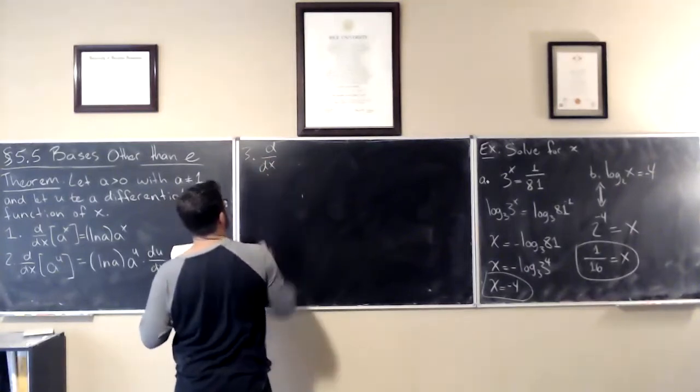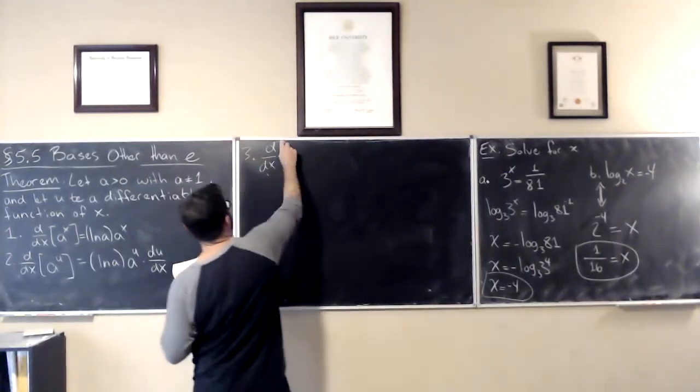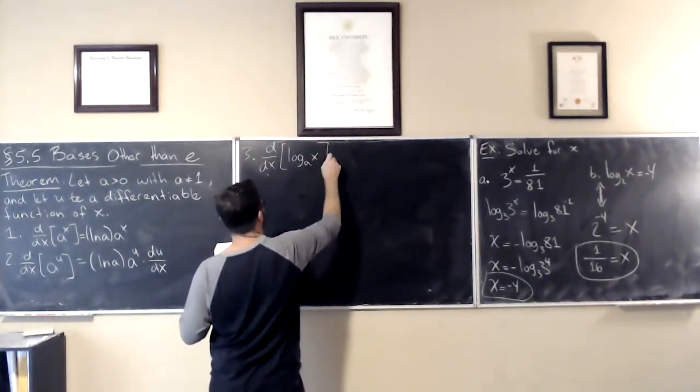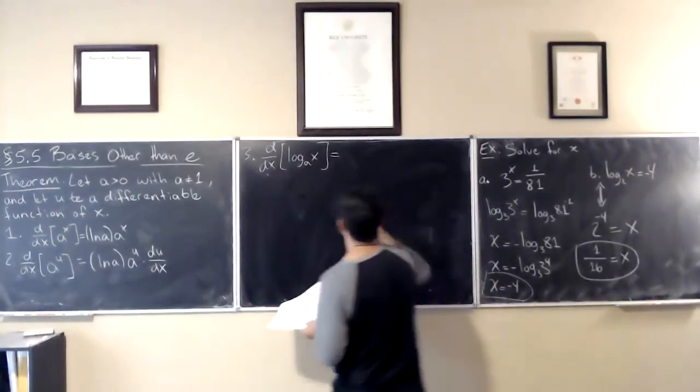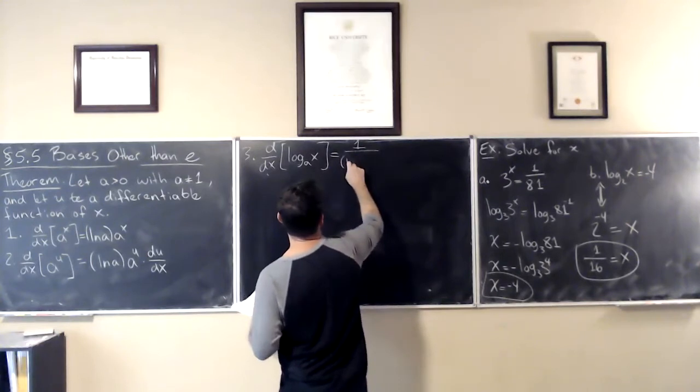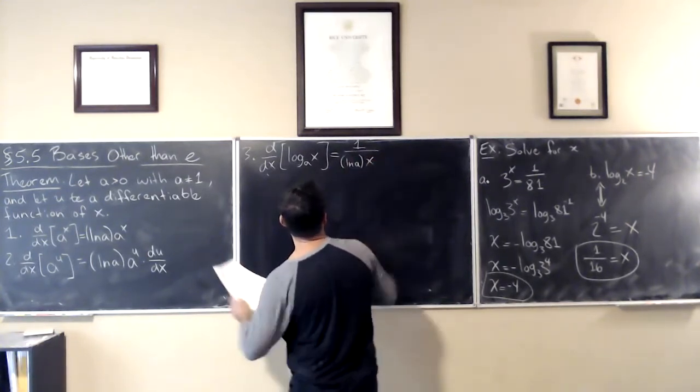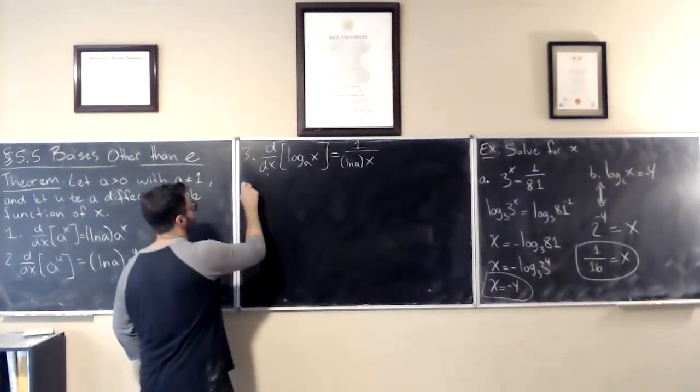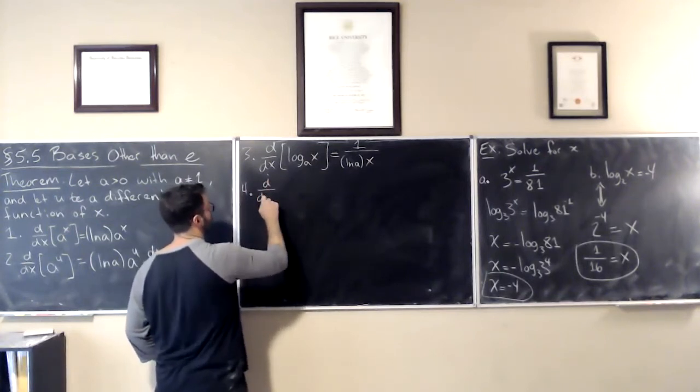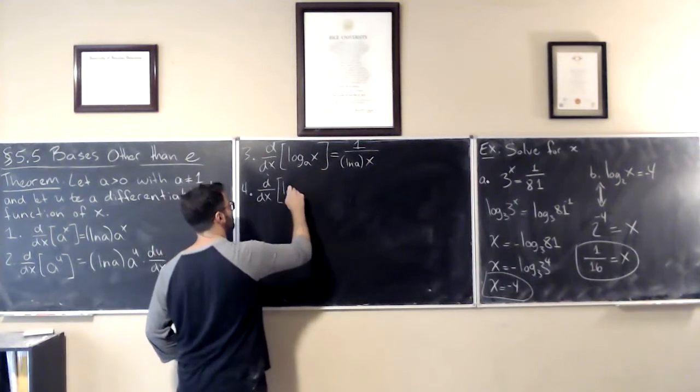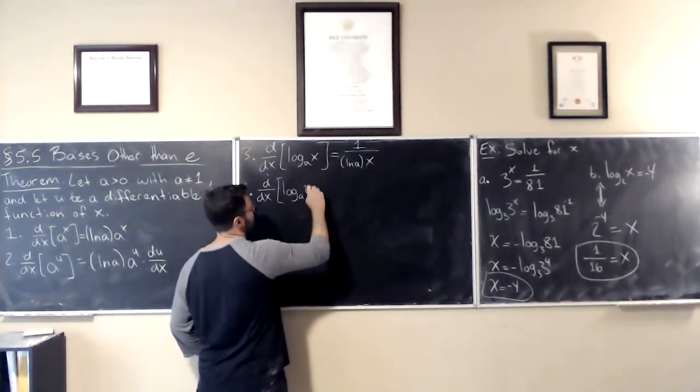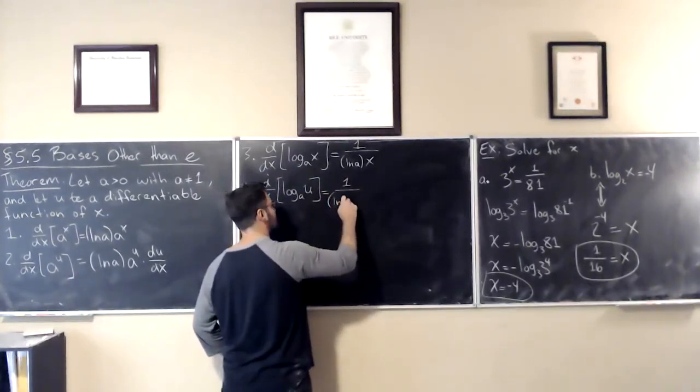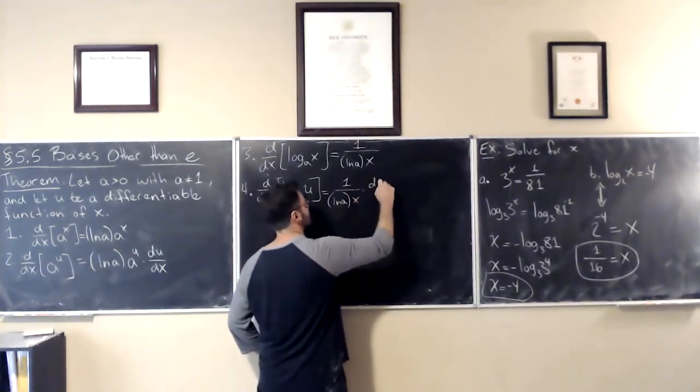So now we're going to take the derivative with respect to x of the logarithm base a. And this is 1 over natural log of a times 1 over x. And the u version, of course, which is just the chain rule.